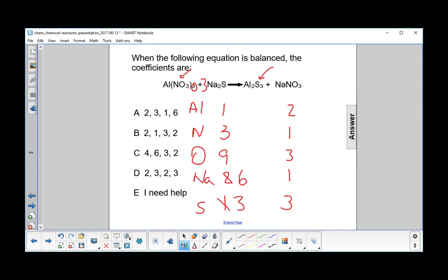All right, this makes the next step look a little straightforward. Let's look at sodium. There's six now on the left, and there's only one on the right. Let's go ahead and multiply that by six. So we'll put a six here. So we now have six sodiums.